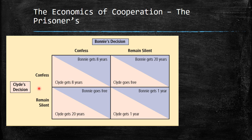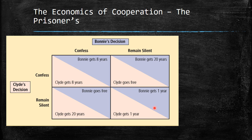We have everything summarized in a payment matrix. We have Bonnie's decision and Clyde's decision — they are interconnected and depend on each other's choices. Each has two options: confess or remain silent. If both confess, both get eight years. If I remain silent but the other confesses, I get 20 years and they go free. If both remain silent, we each get one year. You realize the best outcome is where both remain silent.